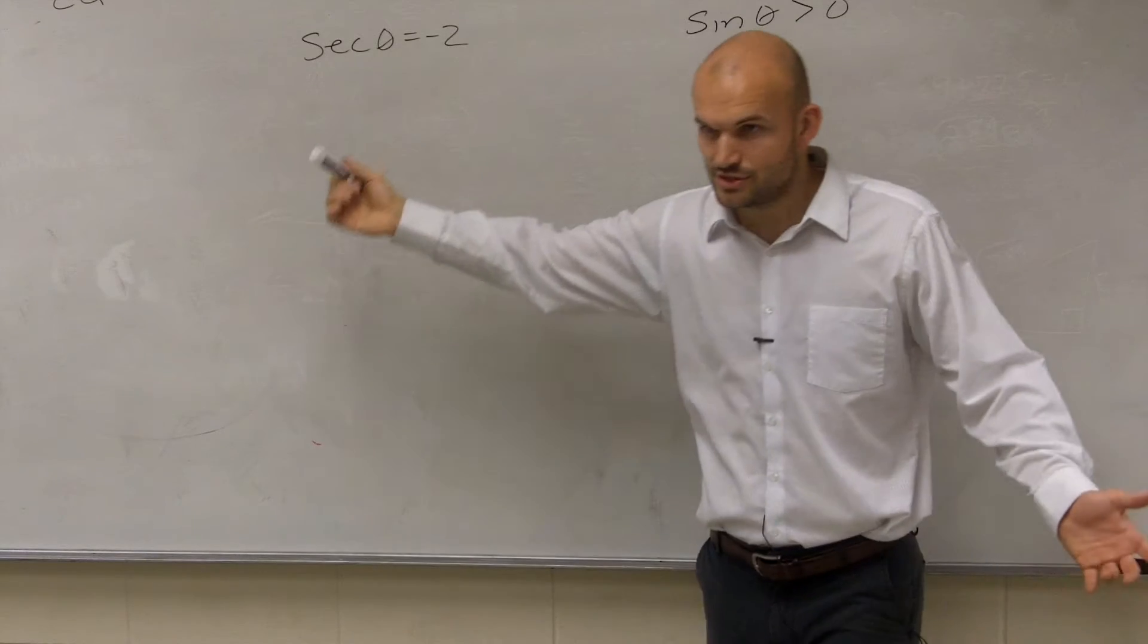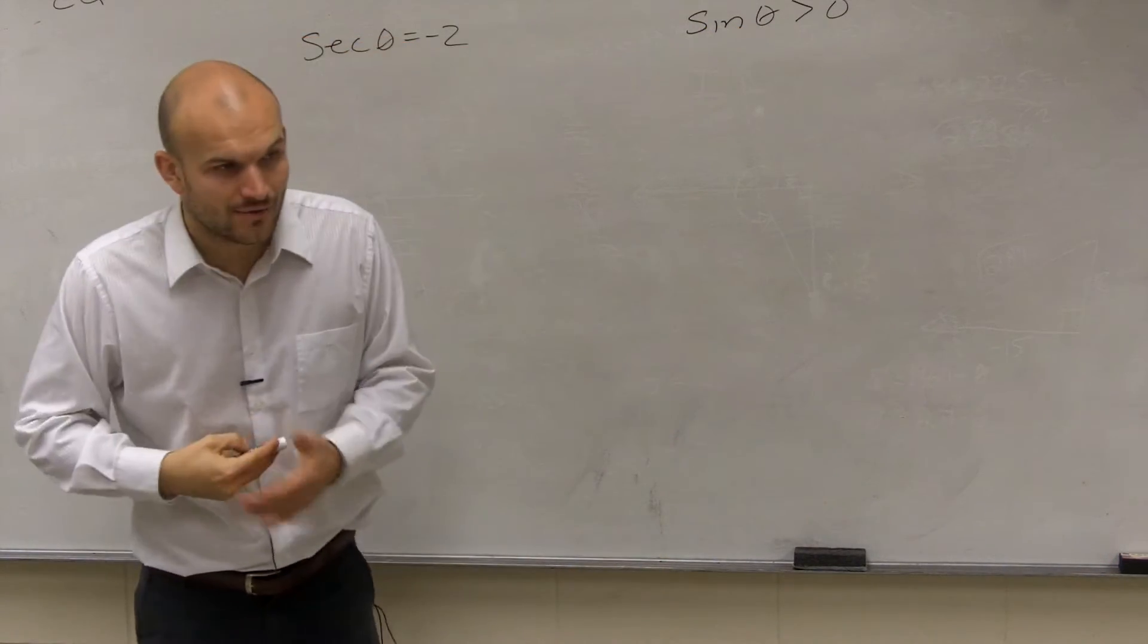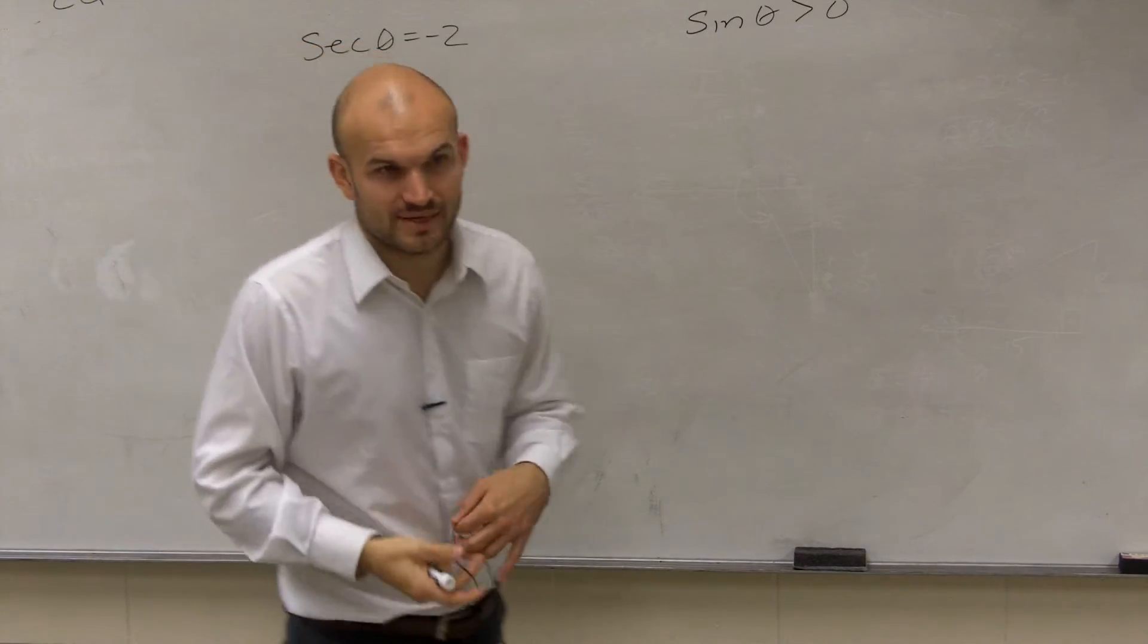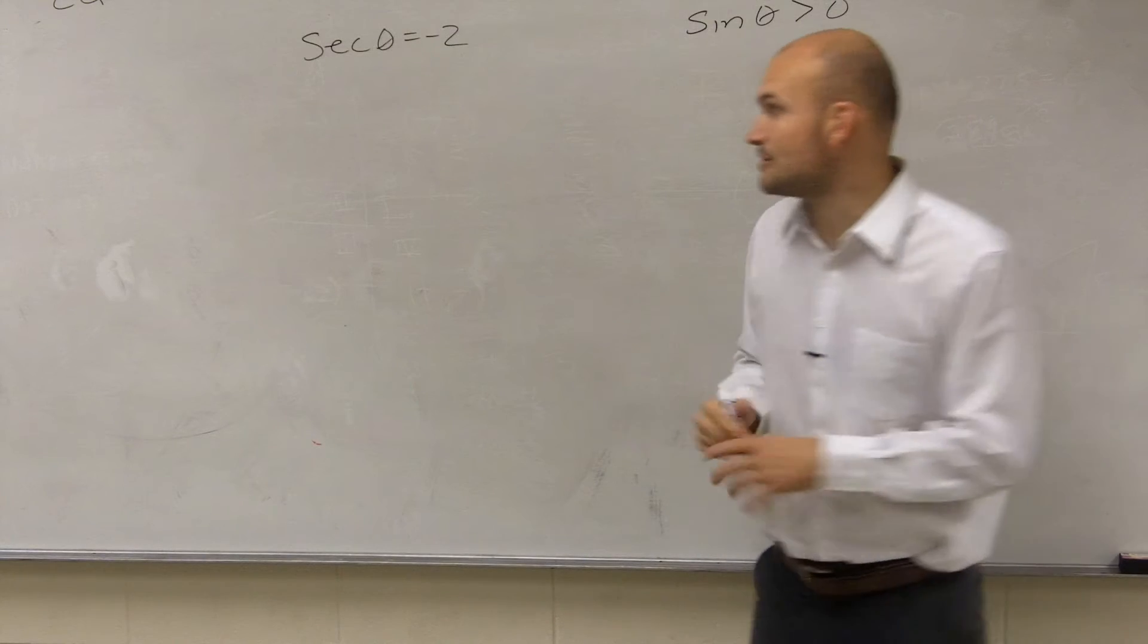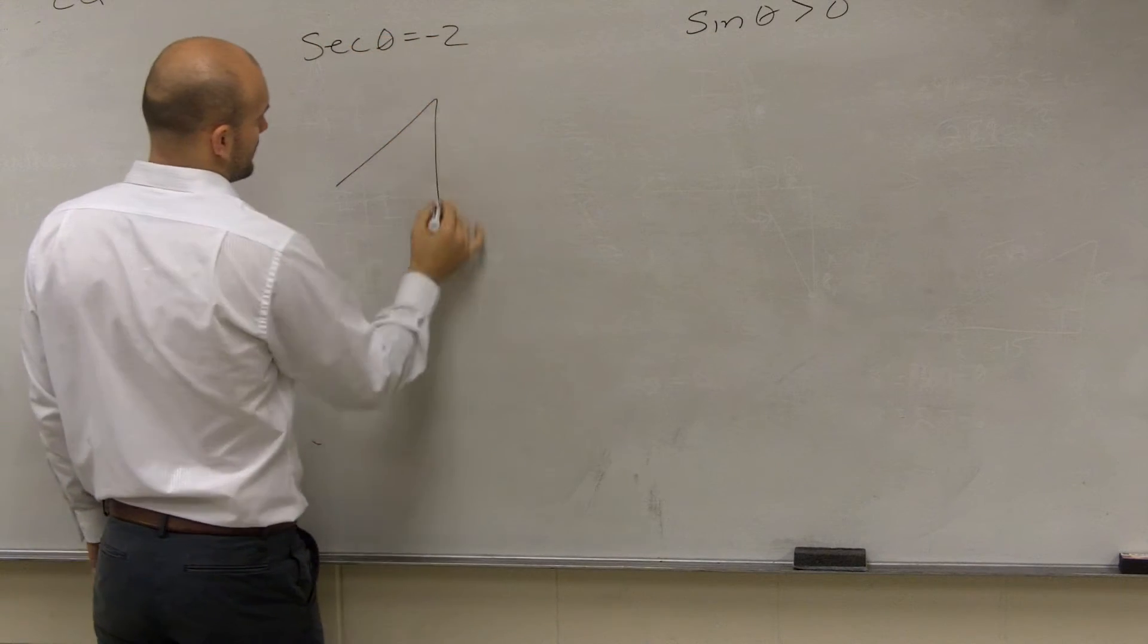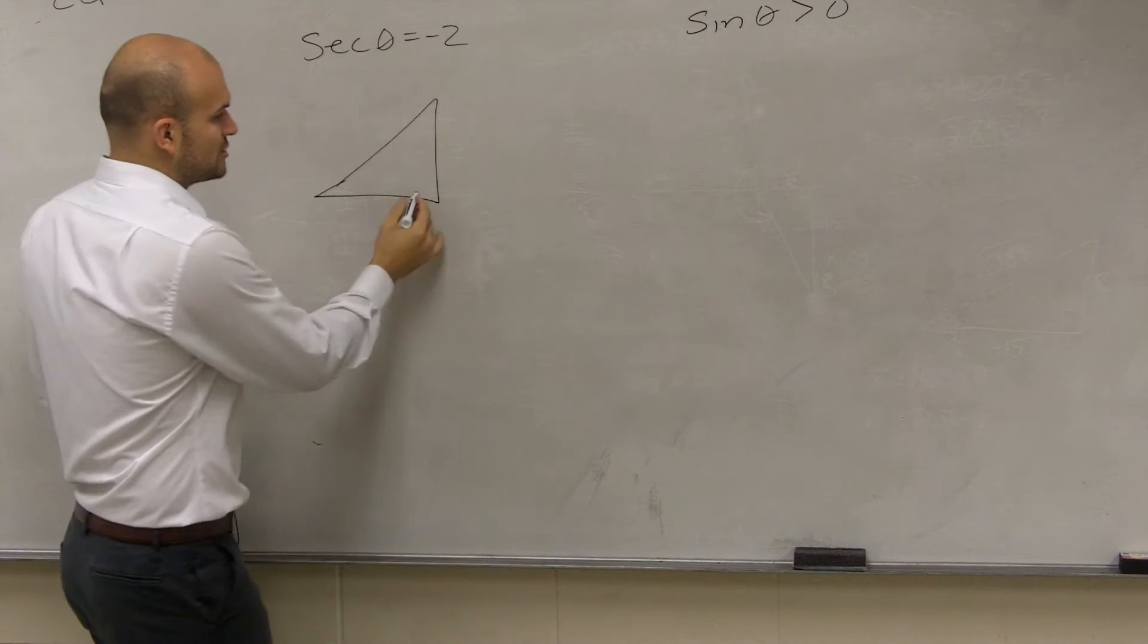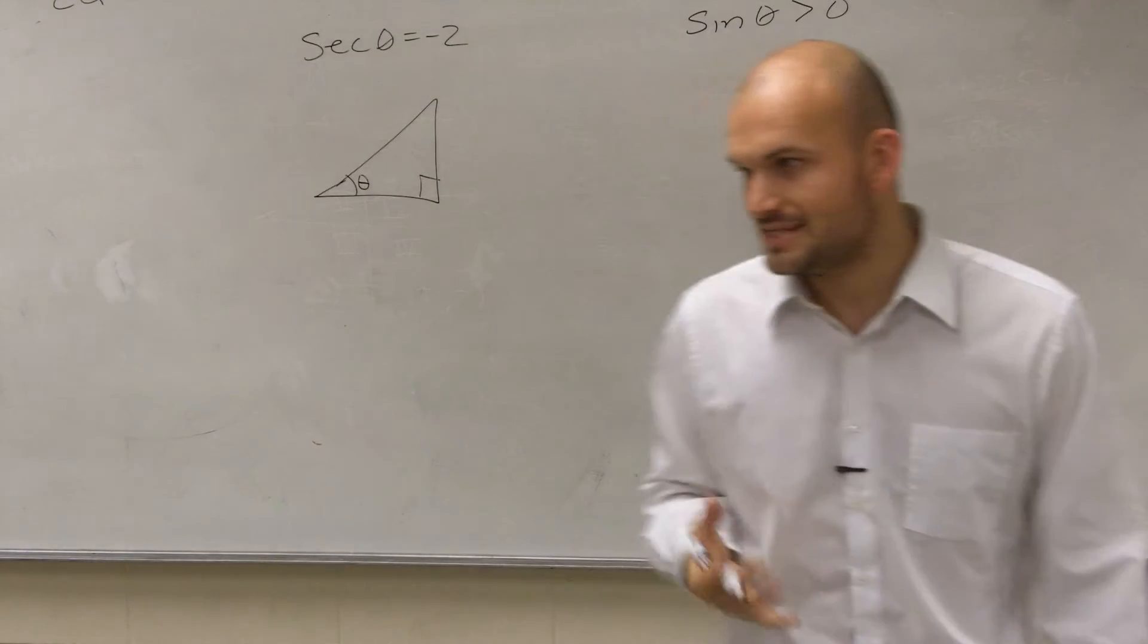So when it's not in the unit circle, we need to make sure we create our secant, our triangle. Now, the main important thing is secant. We need to know from last section, what does secant represent on a triangle? So if I draw a triangle, let's just draw a generic one right now. If I was going to draw a generic triangle, secant represents what?